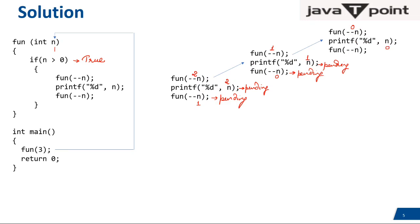That n value will be printed — but again this is a pending statement. When 0 is passed with pre-decrement it becomes -1, also a pending statement. Now when function(0) is called, since 0 is not greater than 0 the condition is false — nothing happens. Now the pending statements begin to execute. The current value of n is 0, so the first value printed is 0.